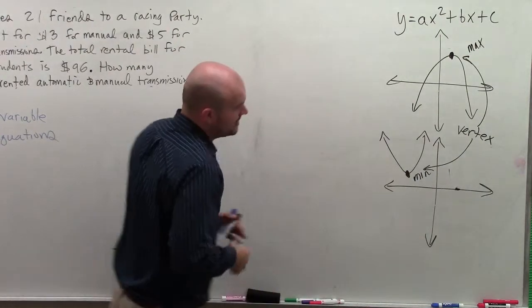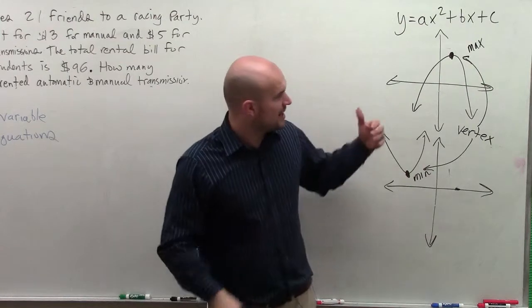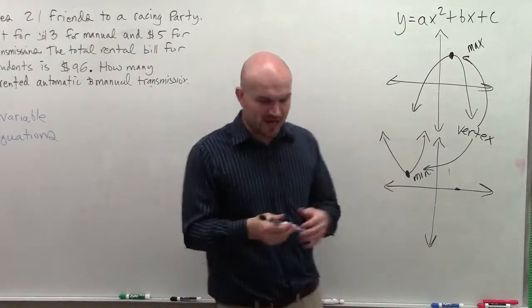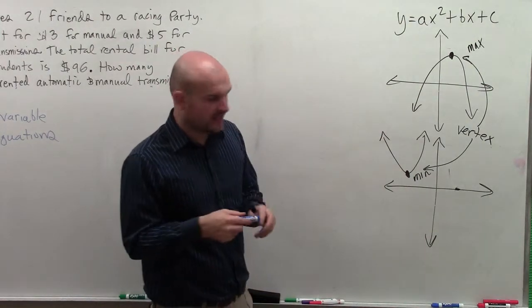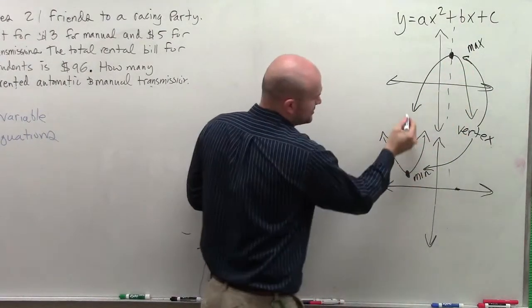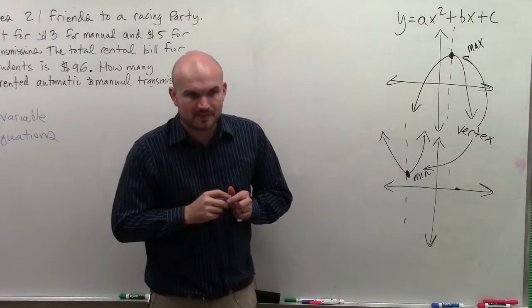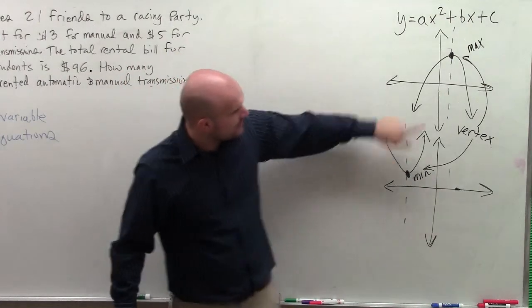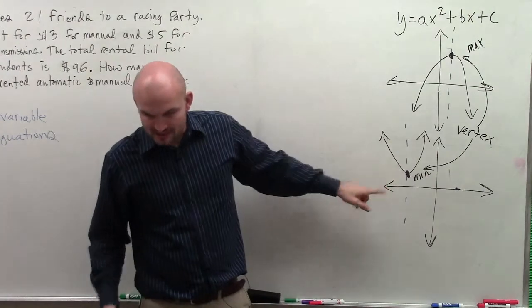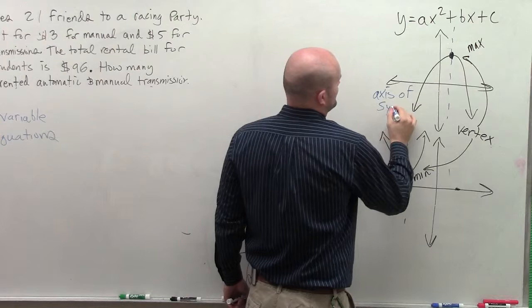The next thing is if you get in from geometry, we talked about symmetry, symmetry of shapes. And now we're going to look at symmetry of an equation, of a graph. And what I want you guys to understand is that parabolas have a line of symmetry, and that line of symmetry goes right through the vertex. And we call that line of symmetry the axis of symmetry.